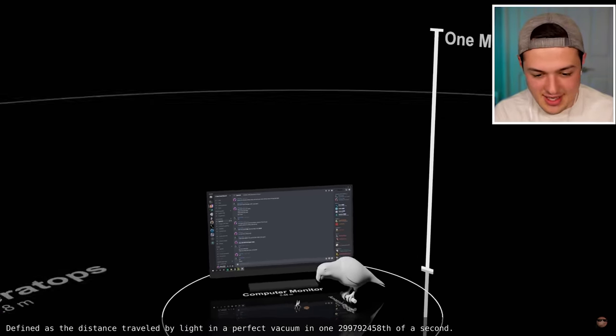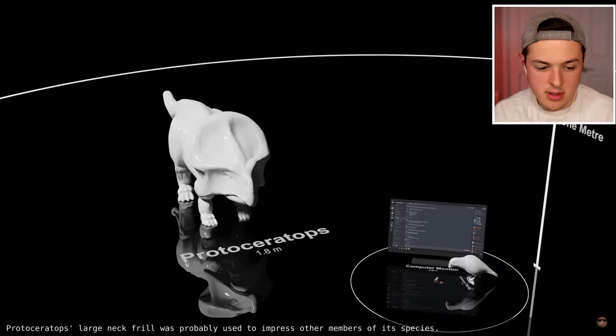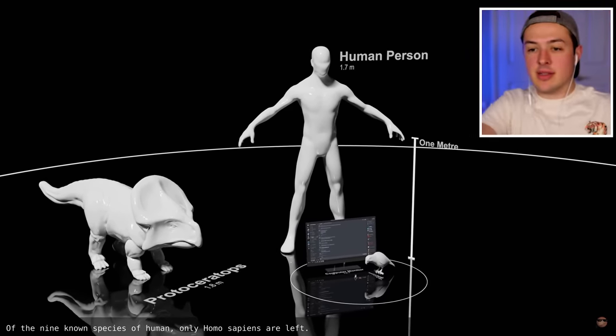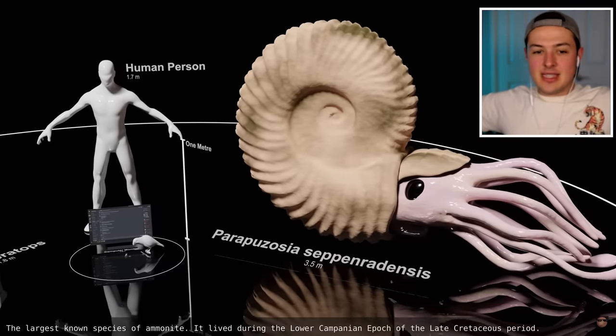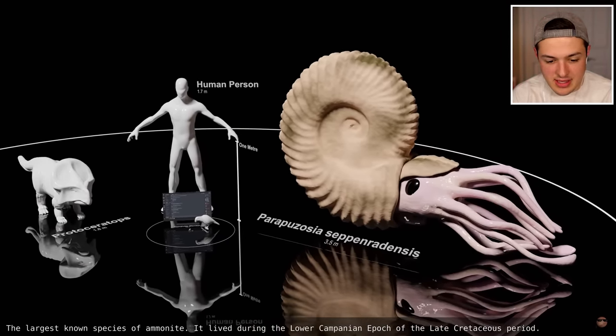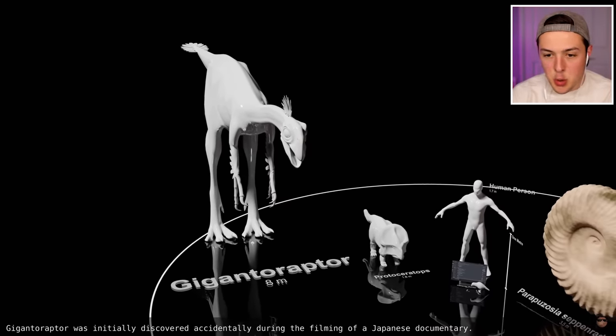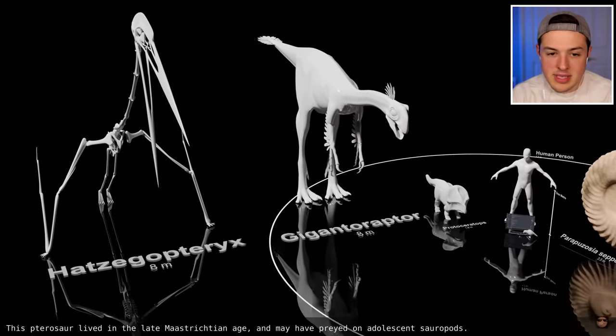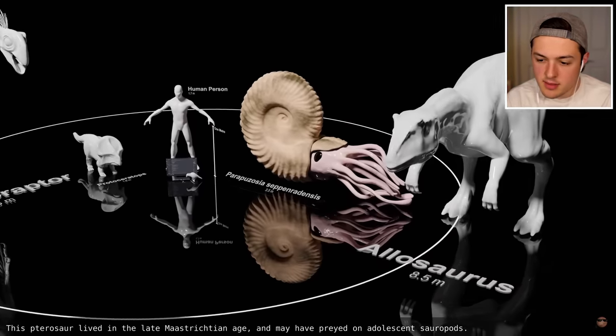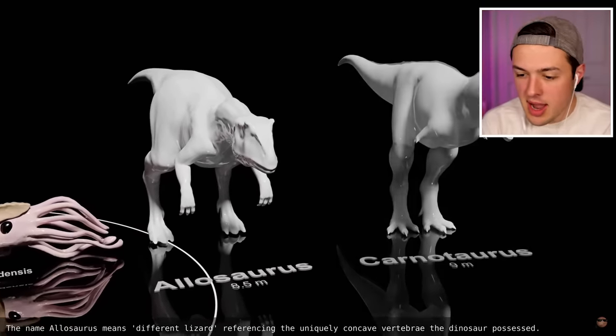Defined as the distance traveled by light in a perfect vacuum. Okay, that was the last thing. This is a Protoceratops, a dinosaur I guess. That is a human person. That is us. That is me. Okay, what is that? The largest species of ammonite? That thing was bigger than people. A Gigantoraptor. Yo, these dinosaurs are crazy big. Okay, that thing looks like a pterodactyl. An Allosaurus. It's like a baby version of a T-Rex.